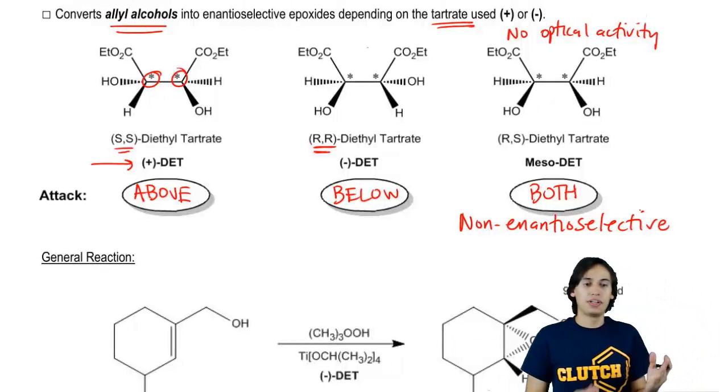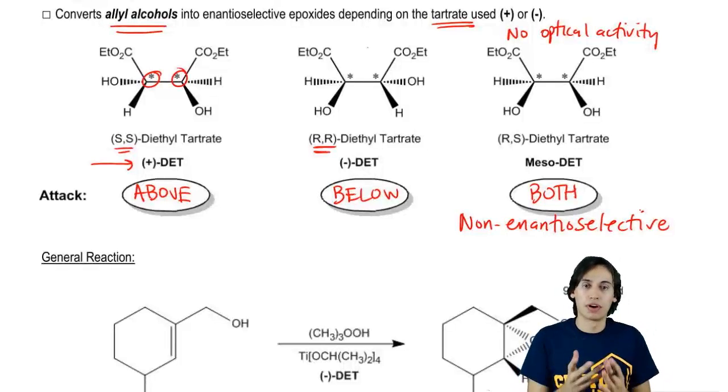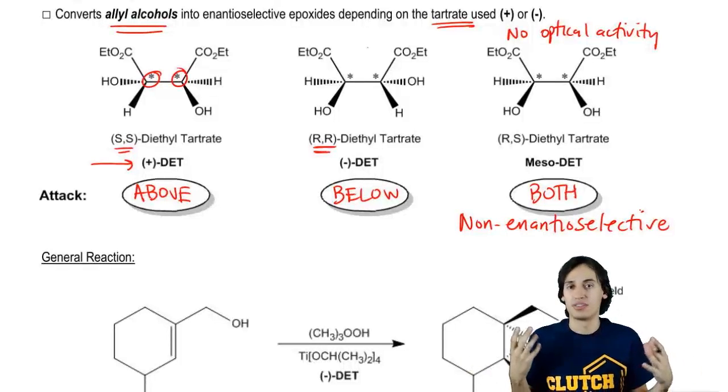And the reason that meso is both is because this one would be non-enantioselective. Because it doesn't have a preference of top or bottom, so it's just going to be a 50% chance.